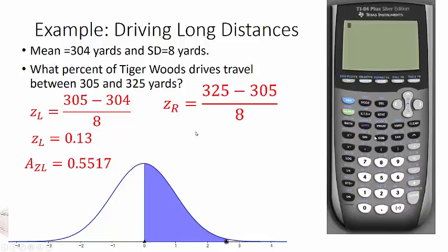I also want to calculate the right area, or the Z for the right. That's not the right area. 325 minus 304, all divided by 8 is 2.63. And if I look up in the table, the area to the left of that is 0.9957.